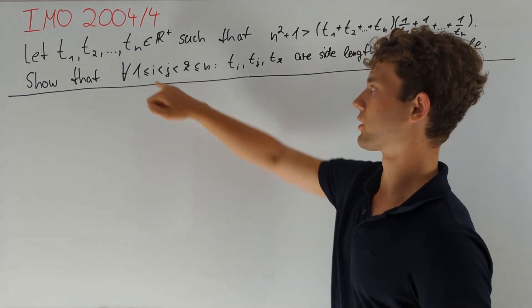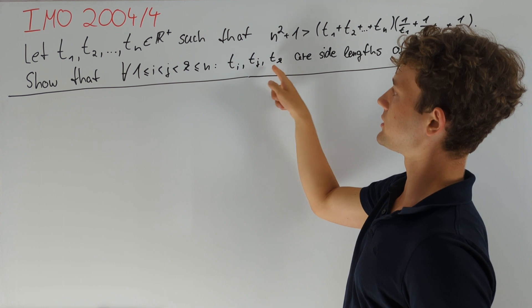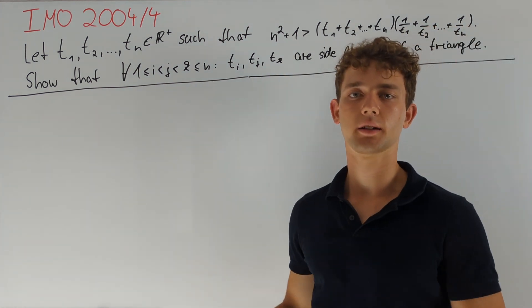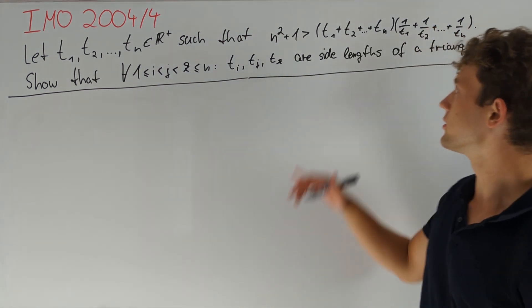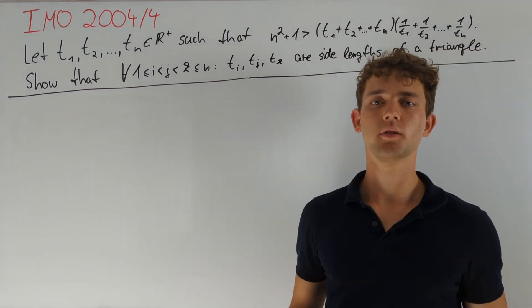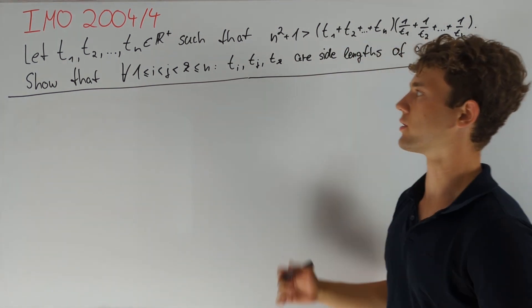In other words, for some given indices, we shall verify that for these three numbers all three triangle inequalities hold. Taking a look at this expression, we see that we can bound it from below with n² by Cauchy-Schwarz.